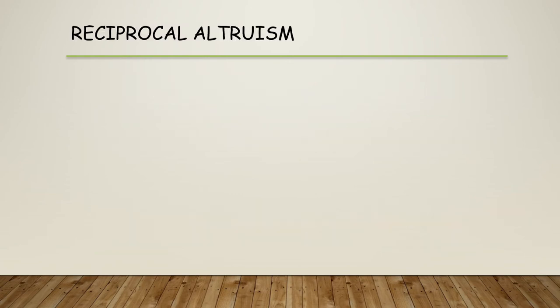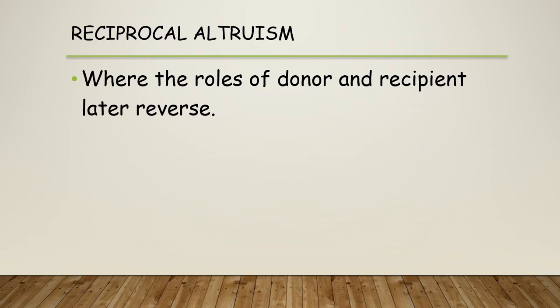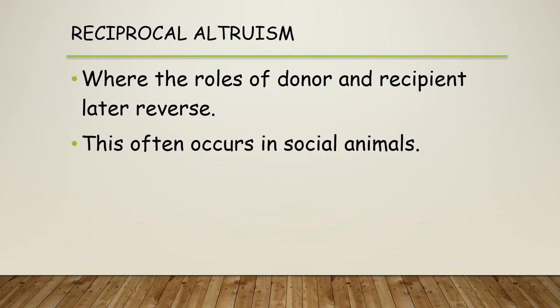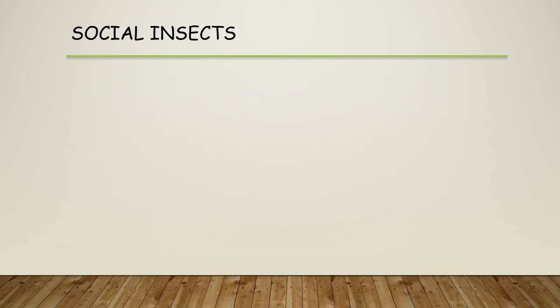An example is reciprocal altruism, where the roles of donor and recipient later reverse. This often occurs in social animals — the animal that gave the warning call won't always be the same individual. In meerkats living on the ground, they have sentry duties and swap those roles on a regular basis, looking after each other within their social groups.